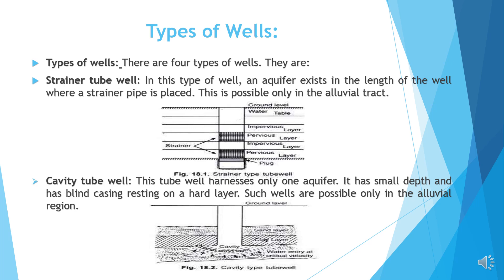The cavity tube well. This tube well harnesses only one aquifer. It has a small depth and has a blind casing resting on a hard layer. Such wells are possible only in the alluvial region.